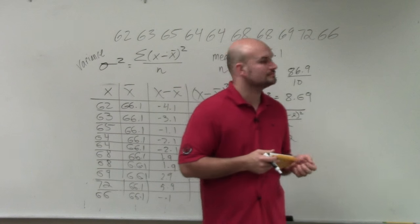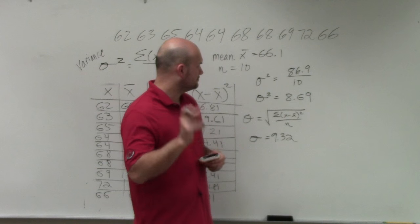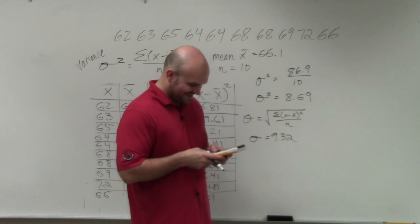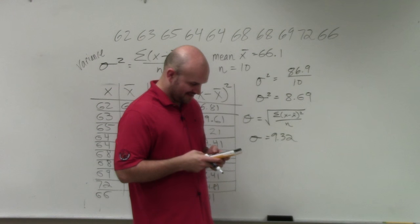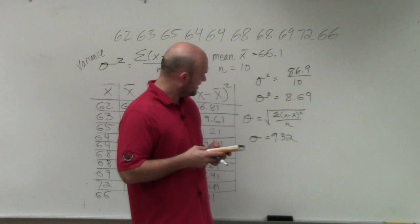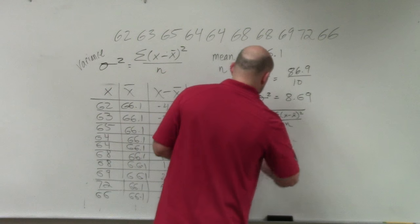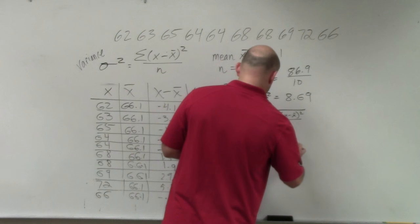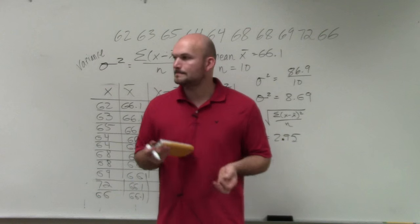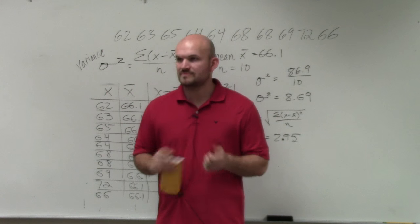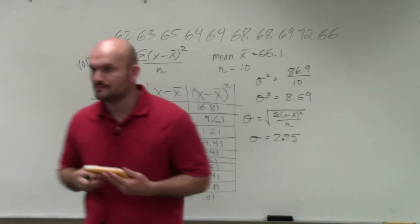If the variance is 8.69, how is the standard deviation of the regular deviation? I typed in the wrong number. Thank you. 8.69 square root. Sorry about that. I was looking at that. I took the square root of 86.9. 8.69 square root of that is 2.95. Nathan, do you have any questions? Does that make sense?